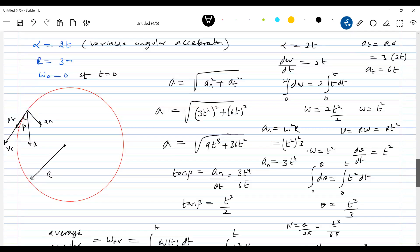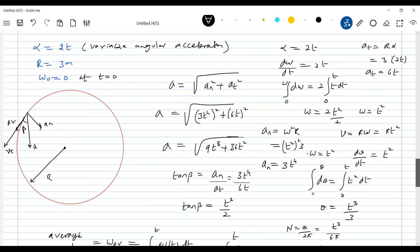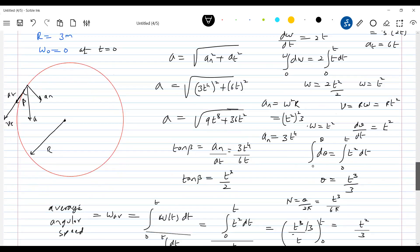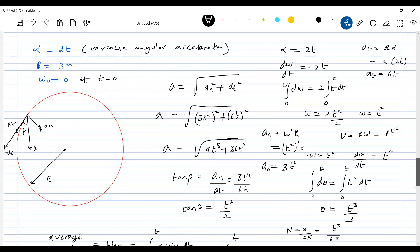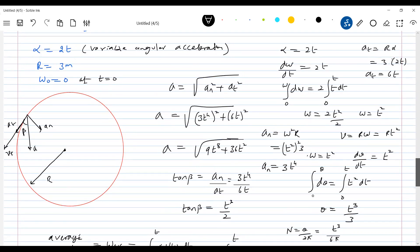We have started like this. So alpha constant or variable? Yes, we can manage. This is mathematics. What we did earlier - variable acceleration motion. That we are doing for circular motion. Nothing big.